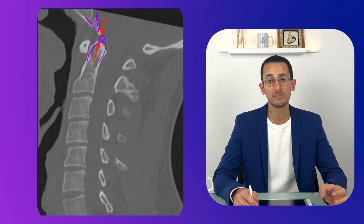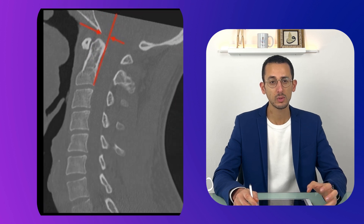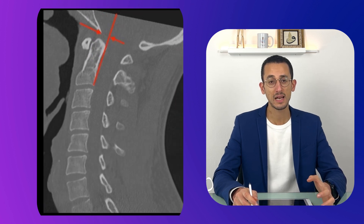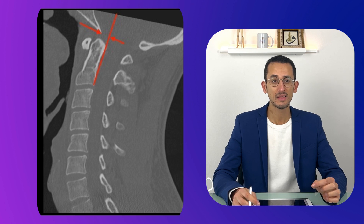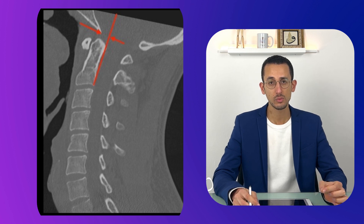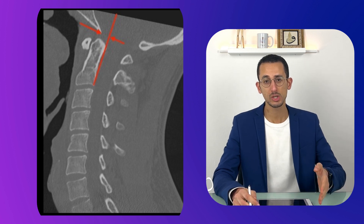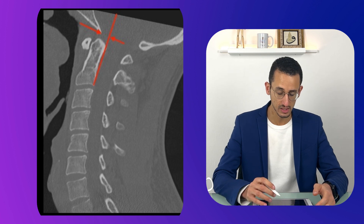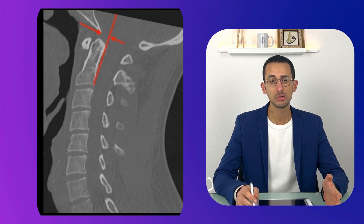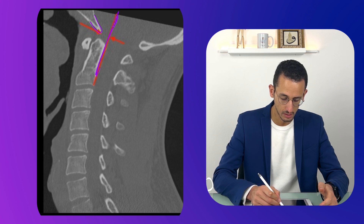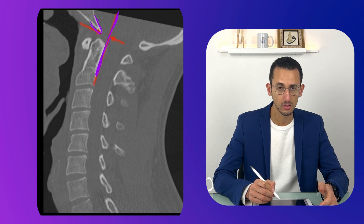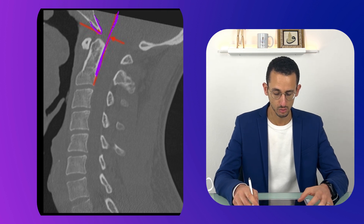The BDI should be less than 12 mm in adults. The other measurement is the Basion-Axial Interval, which is the distance between the Basion and the axial line that goes just posterior to C2, as you can see here. This should also be less than 12 mm in adults — measured between the Basion and the line on the posterior surface of C2.